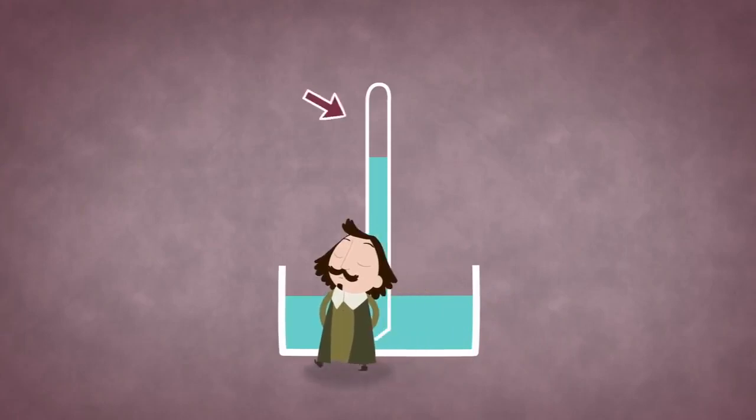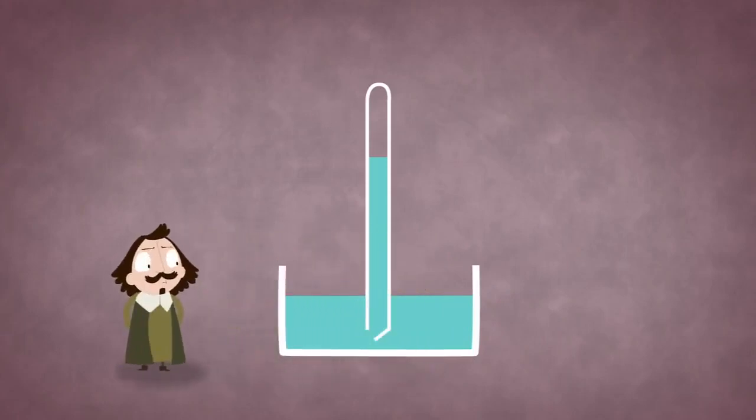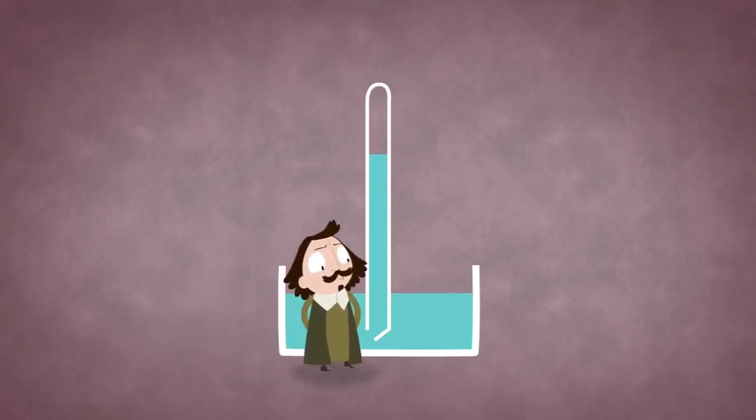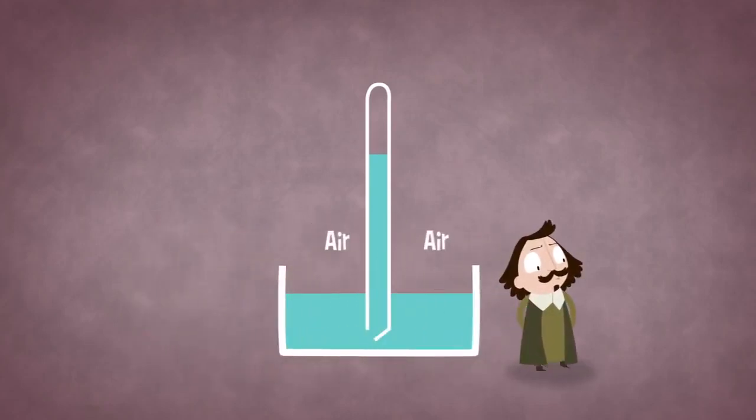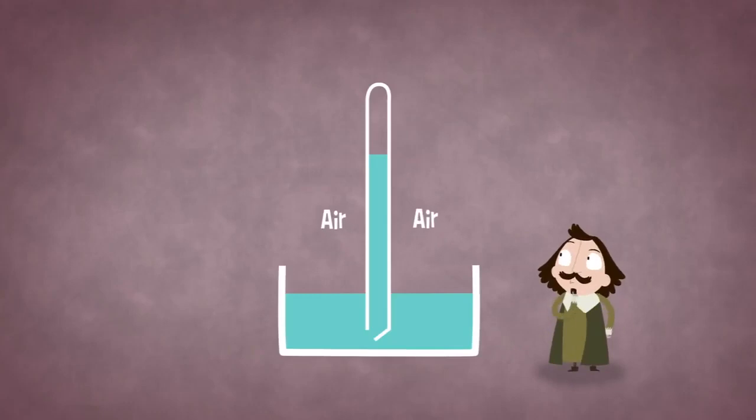Instead of focusing on the empty space inside the tube, he asked himself what else could be influencing the water. Because the only thing in contact with the water was the air surrounding the pool, he believed the pressure from this air could be the only thing preventing the water level in the tube from dropping further.